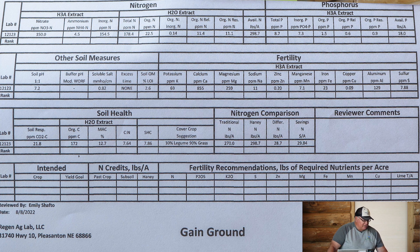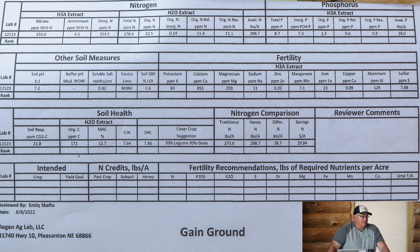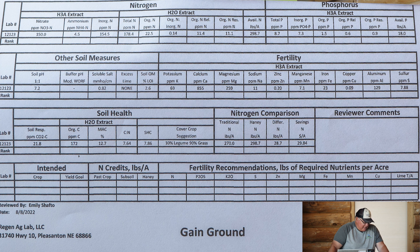Soil pH is not much different. Then I slide down under soil health scores and look at soil respiration. One shows 228.8 — that's the CO2 burst similar to what Brady talked about. 228 is a pretty good number; we like to see numbers above 200 there. But the other one is 21.8. That soil is pretty much dead — there's just not a lot of life in it.